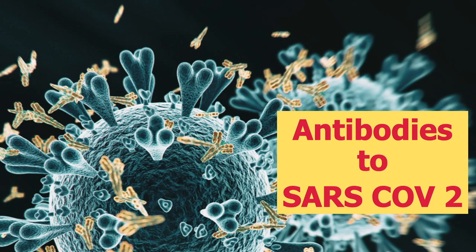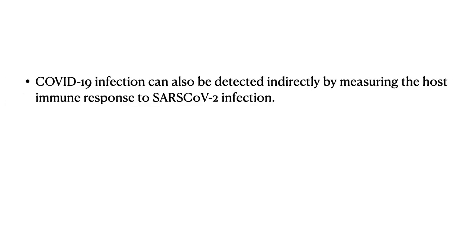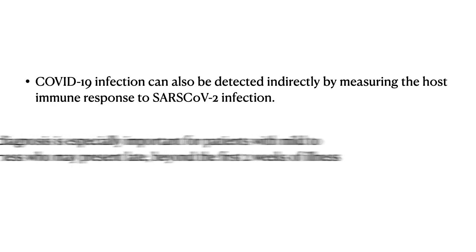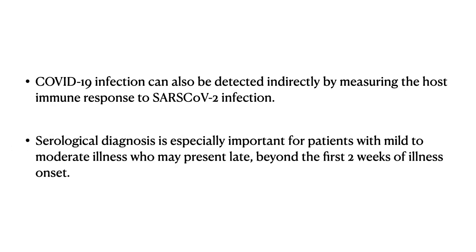The second method of detecting SARS-CoV-2 infection is by detecting antibodies to the virus in the patient's blood. A COVID-19 infection can also be detected indirectly by measuring the host's immune response to SARS-CoV-2. Serological diagnosis is especially important for patients with mild to moderate illness who present late, because by that time no RNA may be present in the nasopharyngeal or upper respiratory tract, making a serological diagnosis more important.